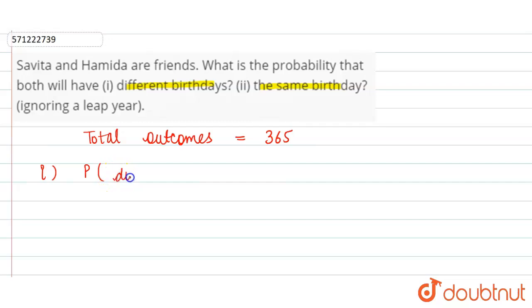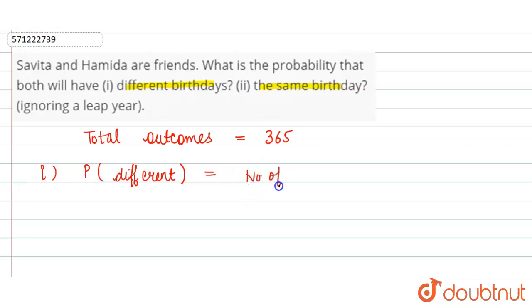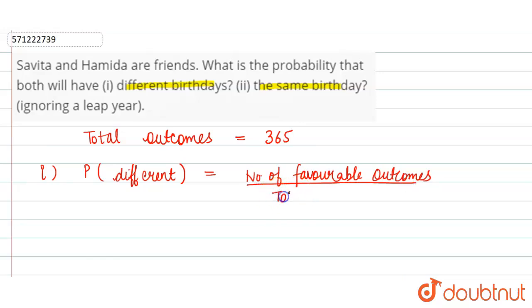The probability of having different birthdays will be equal to the number of favorable outcomes divided by the total number of outcomes.